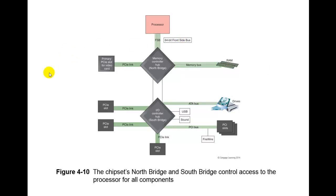We've got the Northbridge — this is the fast end of the way the chipset works. This controls things such as the video card and the RAM. We want this to be very fast, which is why the Northbridge handles this type of information, because it is the fast end of the hub.